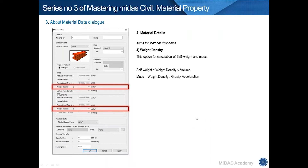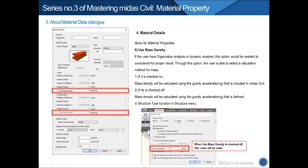The next property is weight density. It is used to calculate the self-weight of a model, and also the mass for dynamic analysis. Under weight density, we can see the 'Use Mass Density' option. The mass density is calculated via the formula: weight density divided by the gravity acceleration.